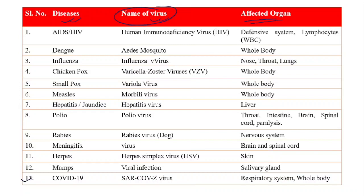Number one: HIV. The full form is Human Immunodeficiency Virus. This is the name of the virus itself. HIV is caused by Human Immunodeficiency Virus and it affects the defensive system — specifically lymphocytes, which are a type of white blood cell. It attacks the immune system of our organs, slowly weakening the human immune system and consuming the living life of a human being.